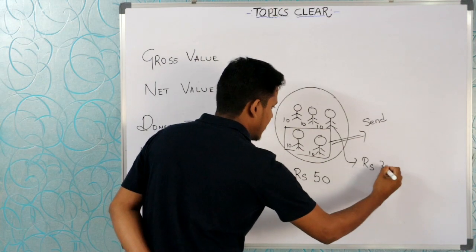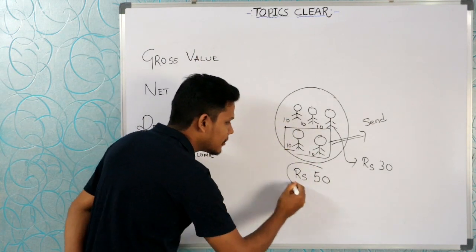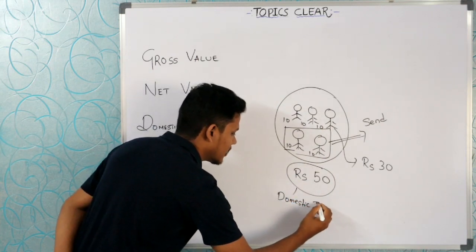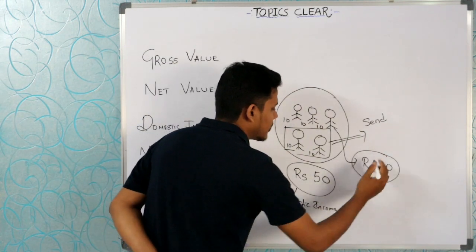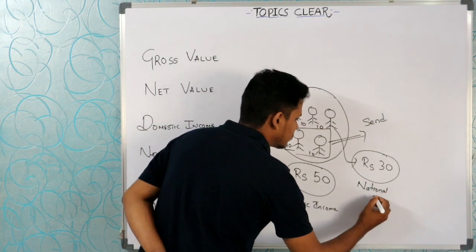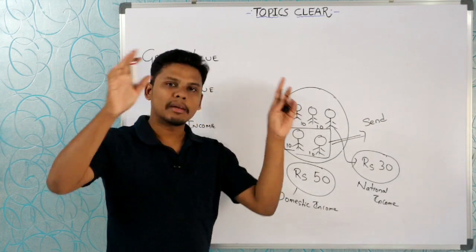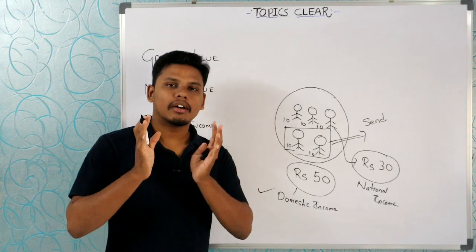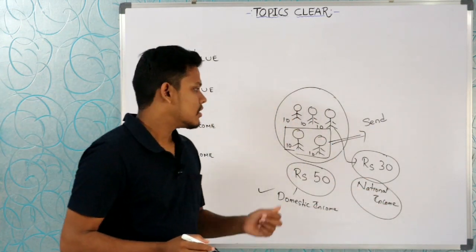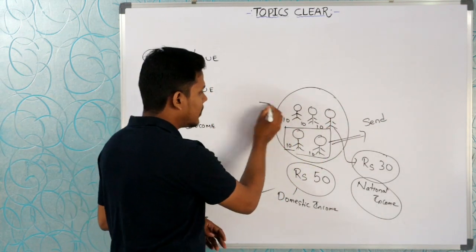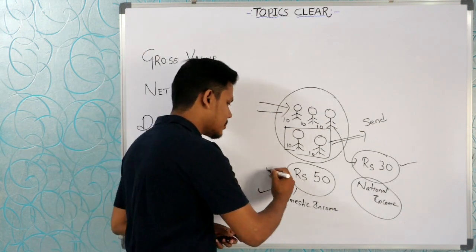What is the income? 30 rupees. So what is the total? The population income is 50 rupees. The country's income is 50 rupees if they are within those boundaries.